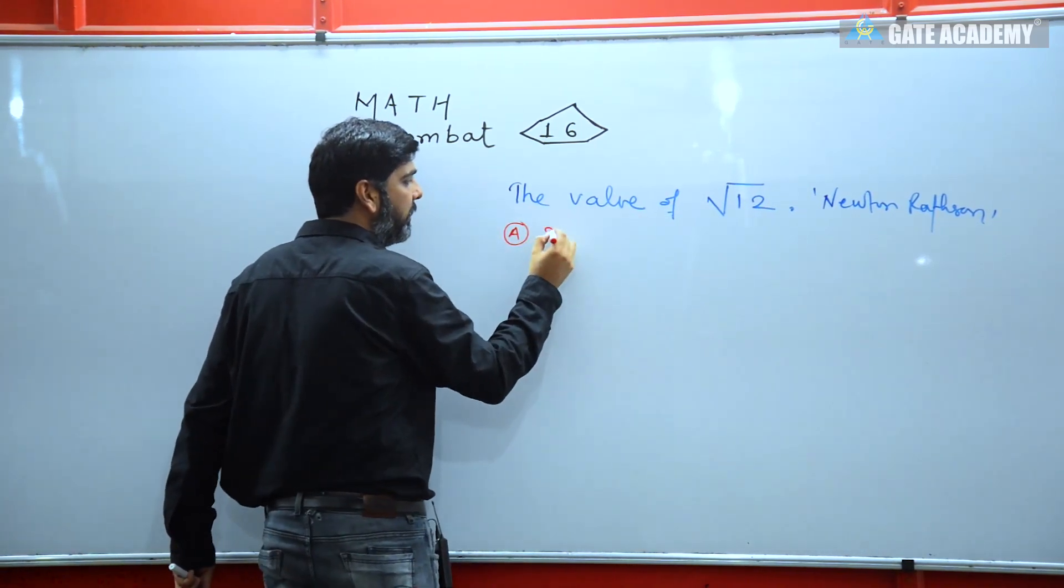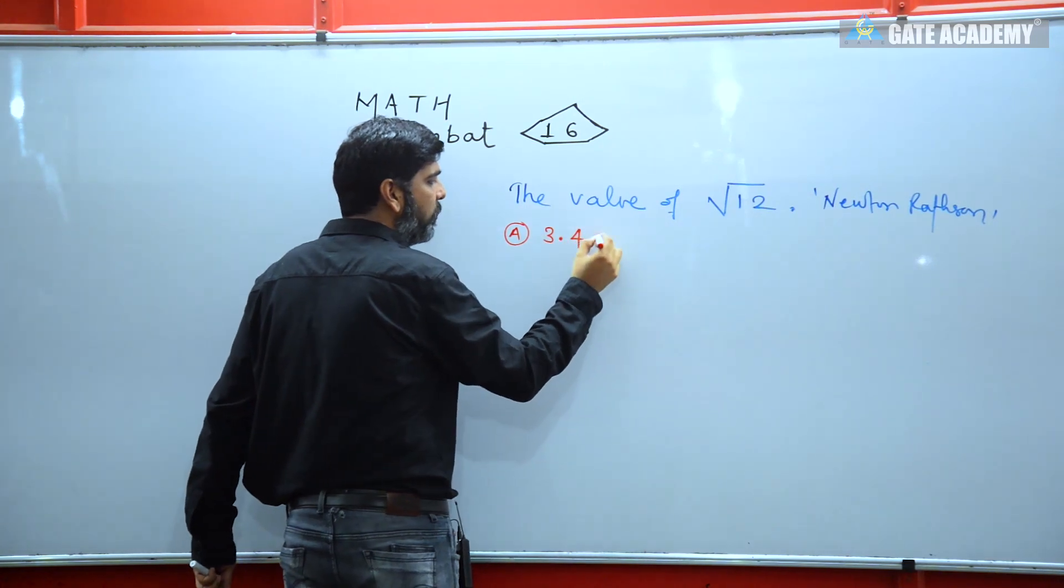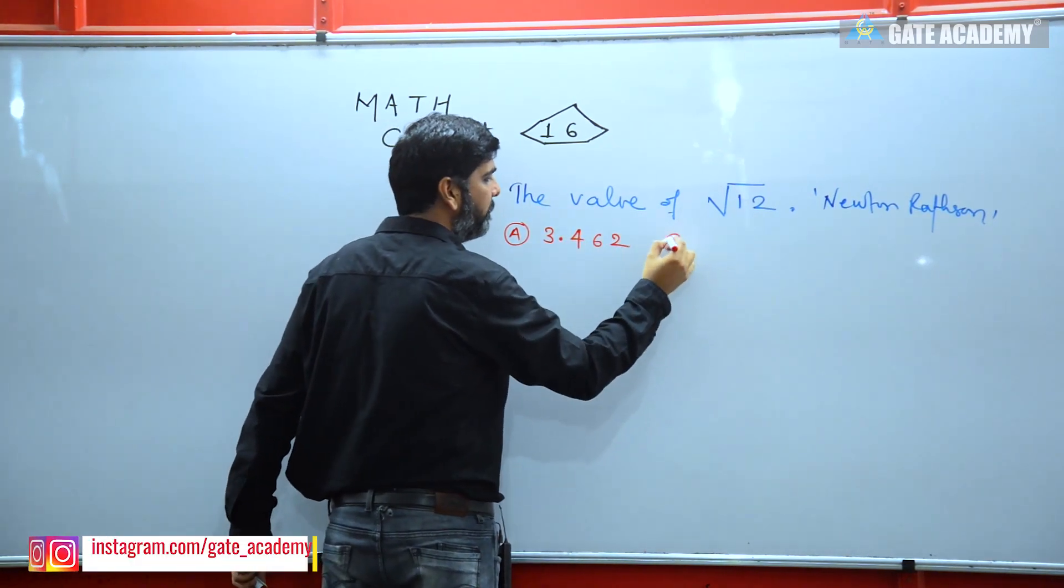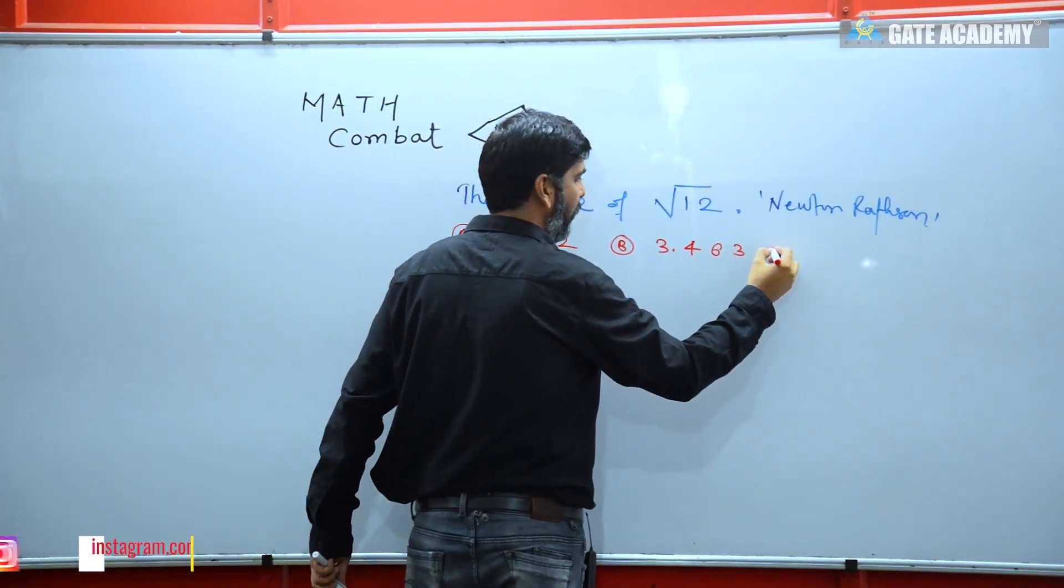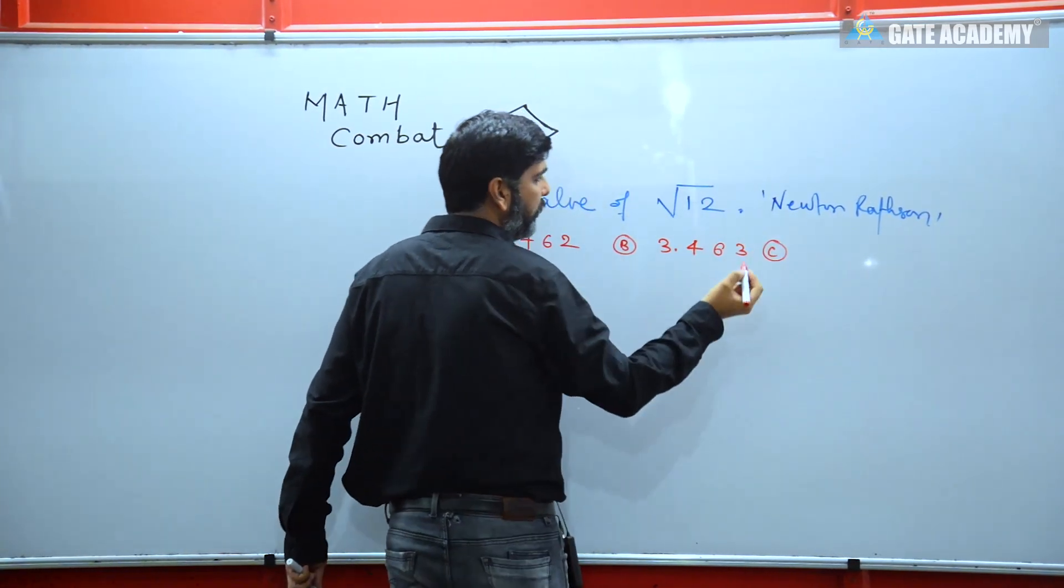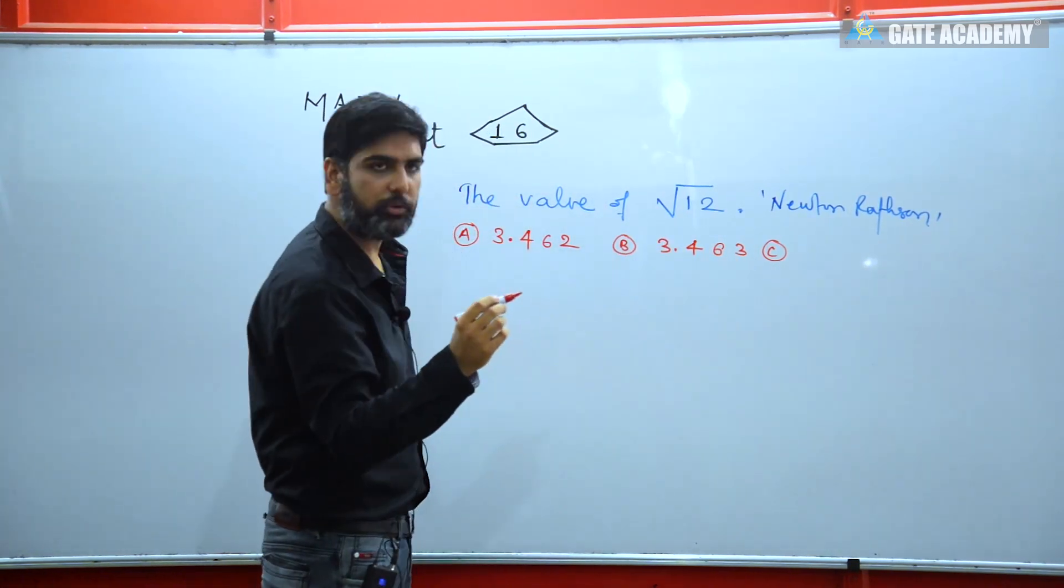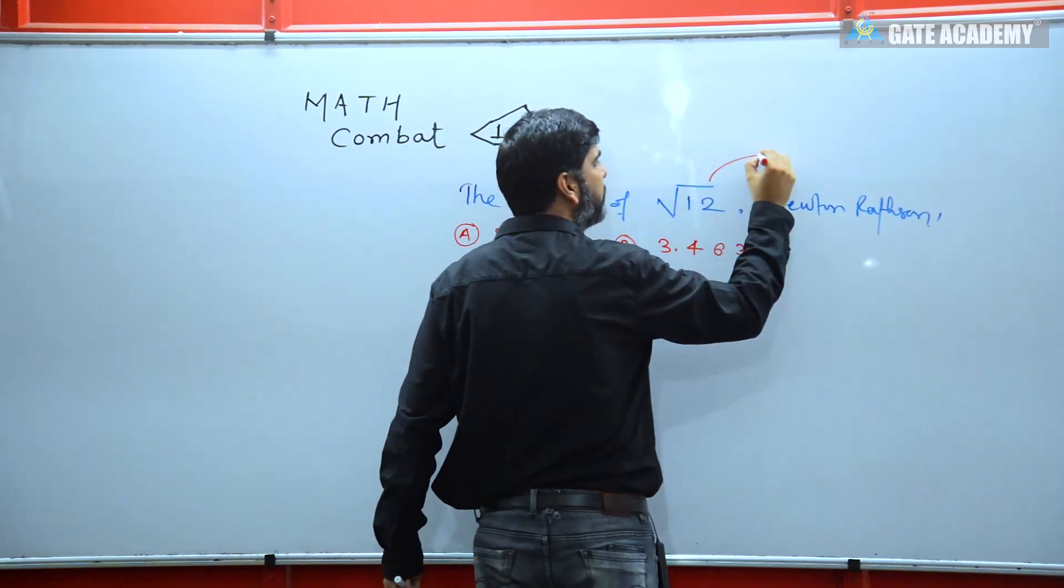Option A is 3.462. Option B is 3.463. Here I am going to mention one more thing: you need to find it up to three decimal places.